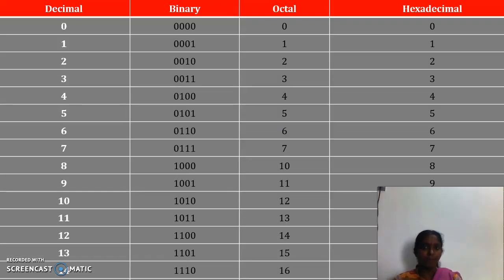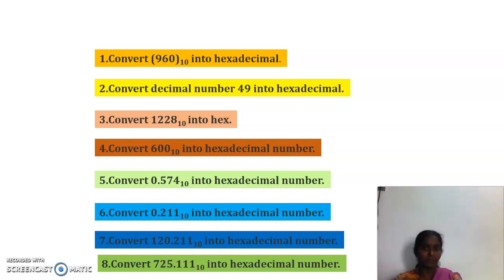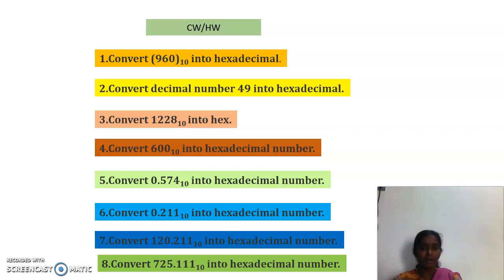This table gives an exact conversion from decimal to binary, decimal to octal, and decimal to hexadecimal — just go through it in the upcoming classes. These are the classwork and homework problems I have listed. Work them out in your notes, take a scan or photocopy, and submit in your assignment page. Thank you, students.